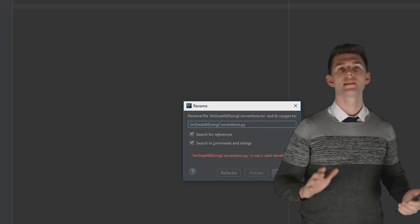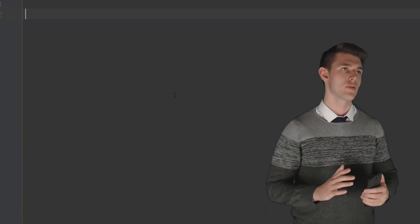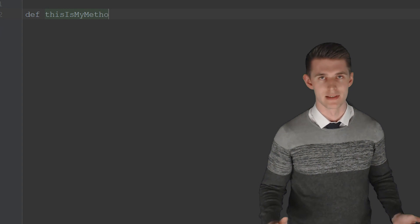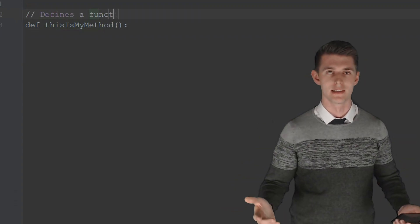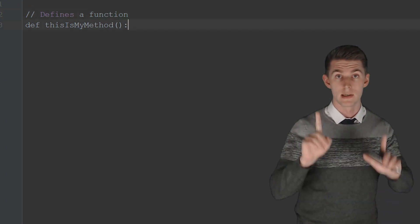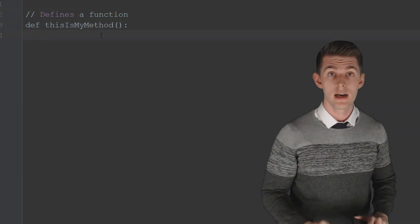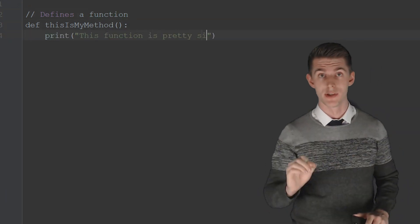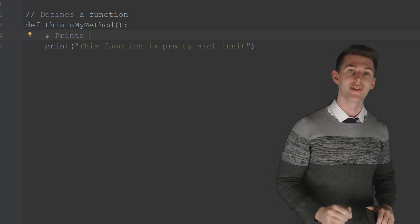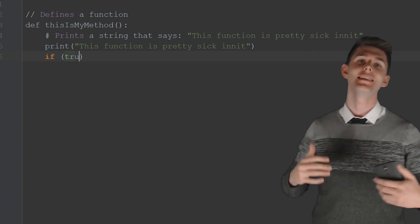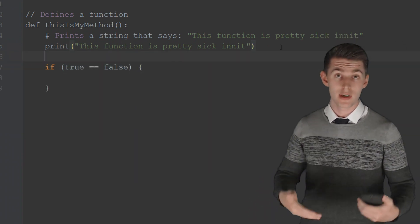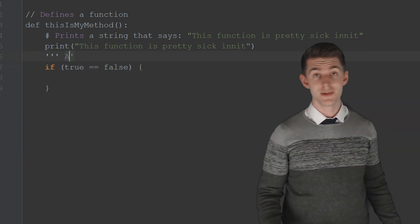Convention number one. Write comments. This is probably the number one piece of advice that you'll find if you look up coding conventions on the internet. The golden rule is a one-to-one ratio. For every word of code that you write, make sure to also write a word of commenting.